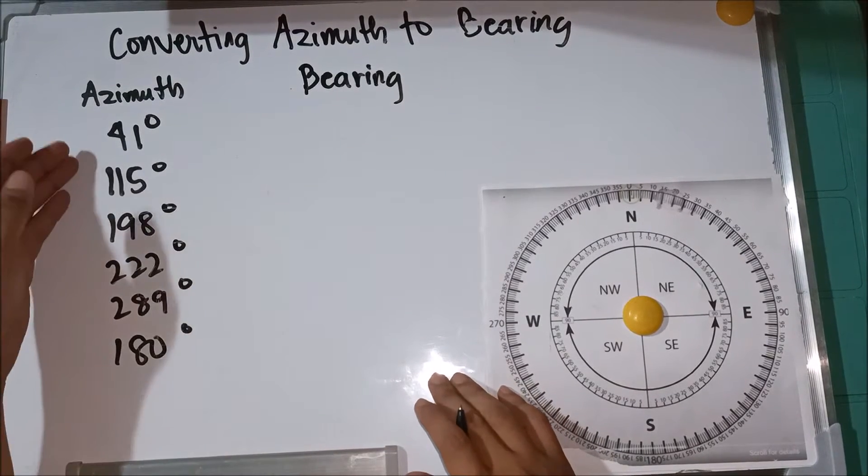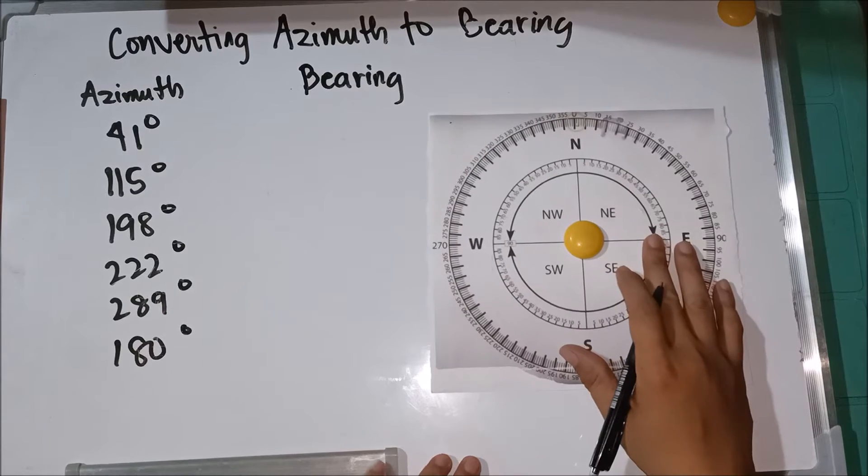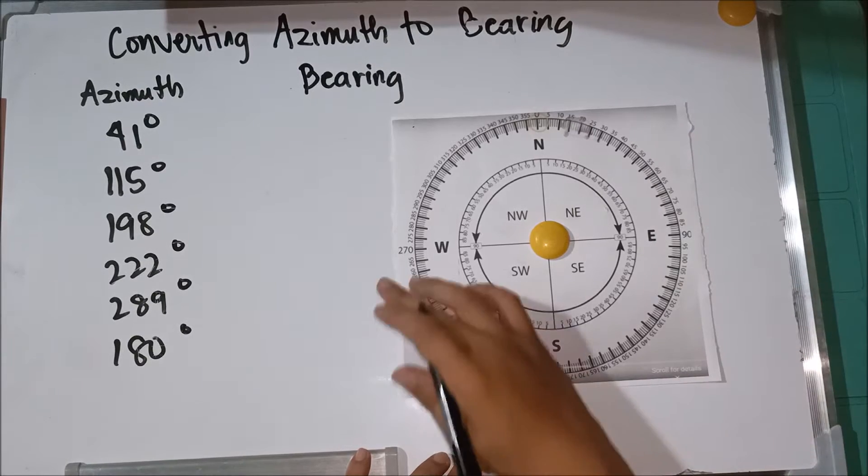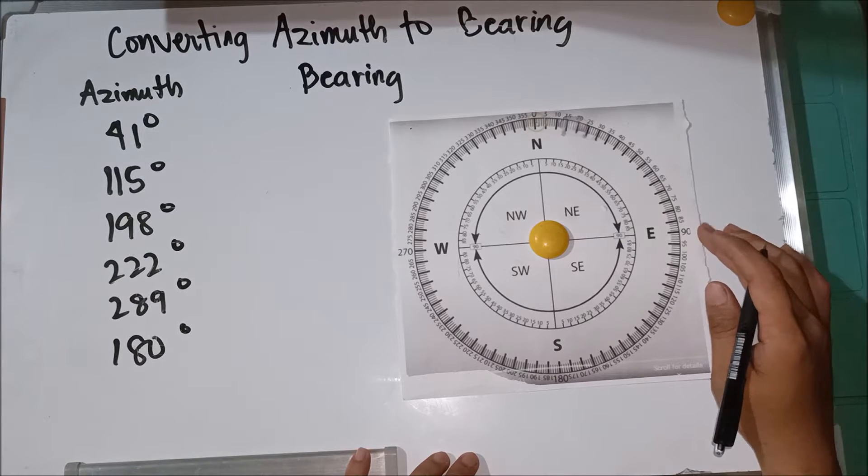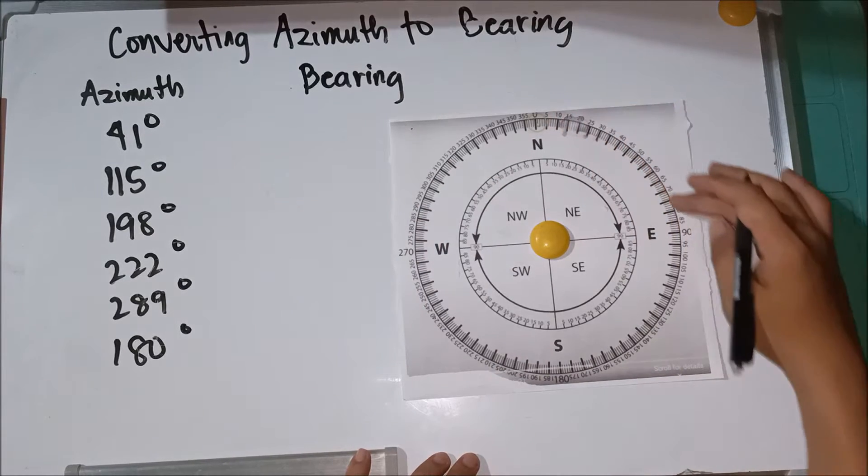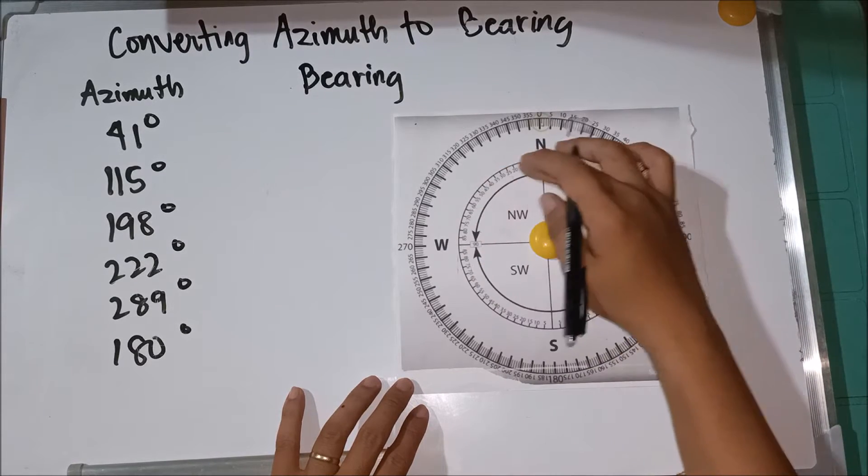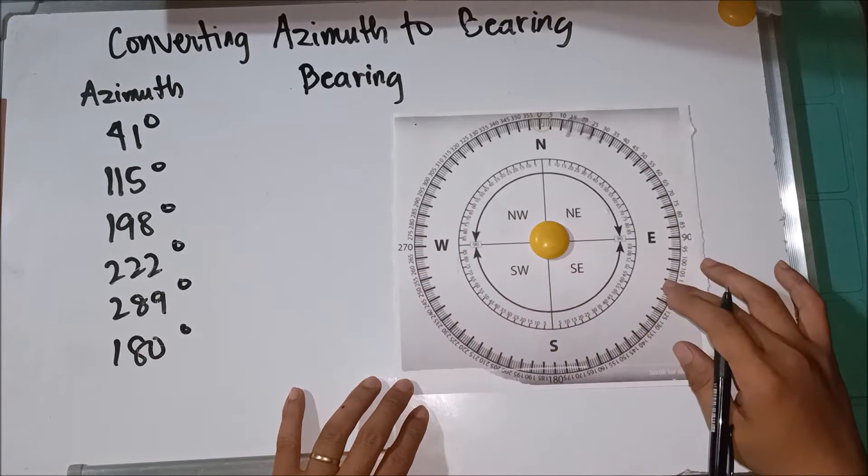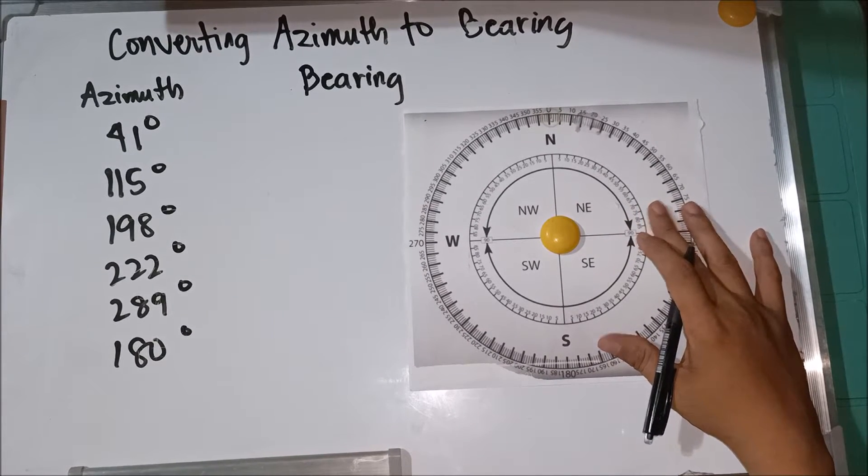So given these azimuths, I'll show you. I have here a compass having the four cardinal directions and also the degrees, the possible degrees. The outside numbers are the azimuth, and the inside numbers are the bearings. If you have this, it's easier to convert azimuths to bearing. But if we don't have this, we need to calculate. Okay, so let's proceed.